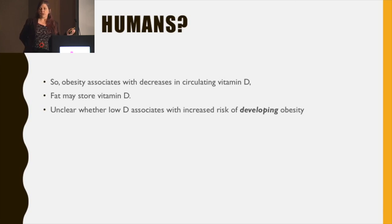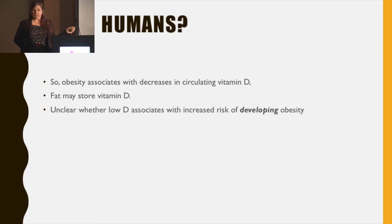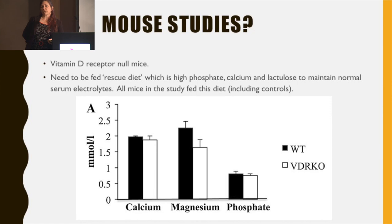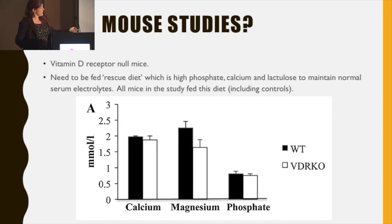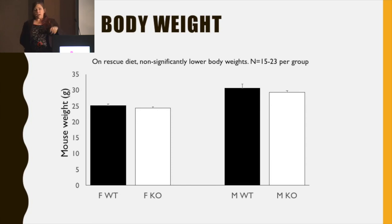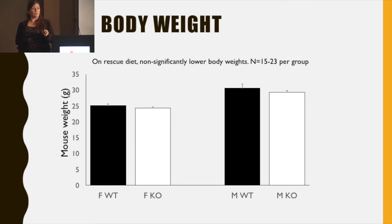So we turn to an animal model — vitamin D receptor null mice, which have genetic deletion of the vitamin D receptor. They need to be fed a special diet high in calcium, phosphate and lactulose to prevent death from hypocalcemia. We fed both the knockout mice and wild-type littermates the same diet, and their calcium and phosphate are pretty well preserved. In our colony, the knockout mice are not statistically significantly lighter, although there's a trend in both female and male knockouts. They are shorter — a feature related to the bone effects of vitamin D — and in many colonies around the world, the mice are sometimes lighter.